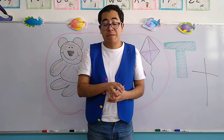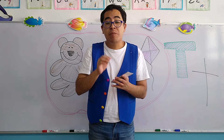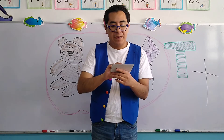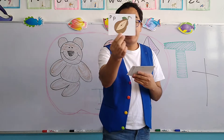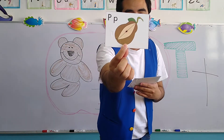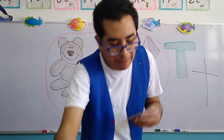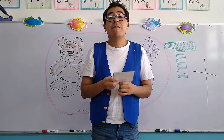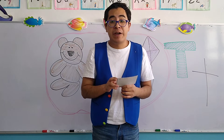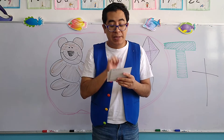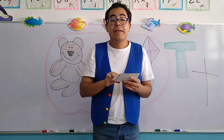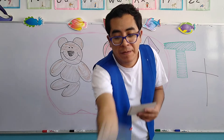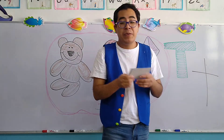The first object, my children — this object uses the letter P. This is an example: here we have the bear. Now, this next letter we use it for fish, for Fernanda or Fernando. Do you know what letter it is? The letter F — F for fish.